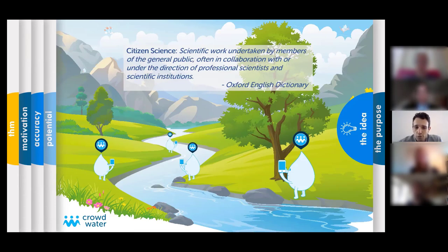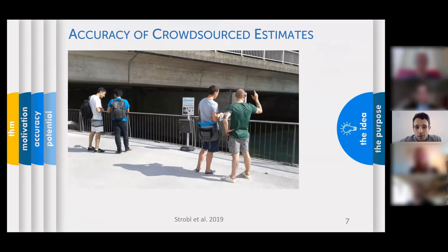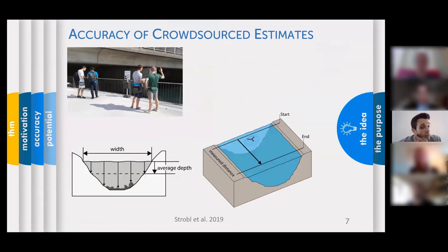In the CrowdWater project our aim was to develop a tool to collect information on streamflow quantities in streams. The easiest and maybe a bit naive way is to just go out and ask people how much water they think is flowing in a stream right now — and that's exactly what we did. We went out in 2016 and 2017 to 10 rivers in Switzerland and asked more than 500 people to estimate the streamflow by estimating width, average depth, and flow velocity.